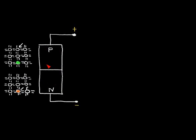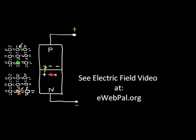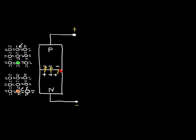Holes diffuse from the p-region over into the n-region. Since holes can be thought of as positive charges, positive charges develop in the n-region. Electrons from the n-region diffuse into the p-region, making it negative. This charge imbalance produces an electric field pointing from the positive region to the negative region, right at the boundary between the p and n materials.